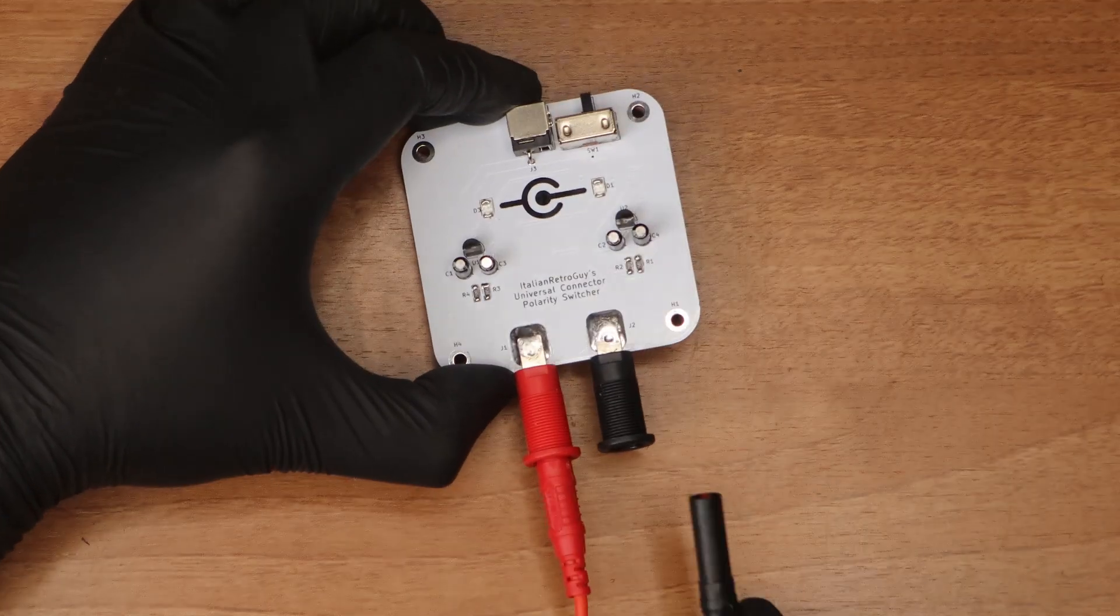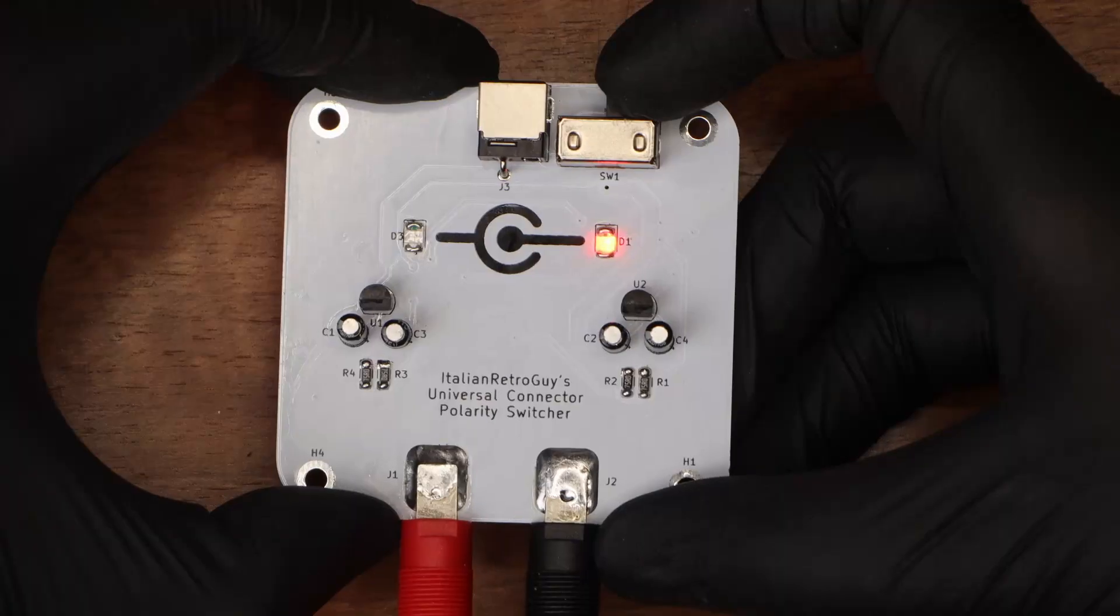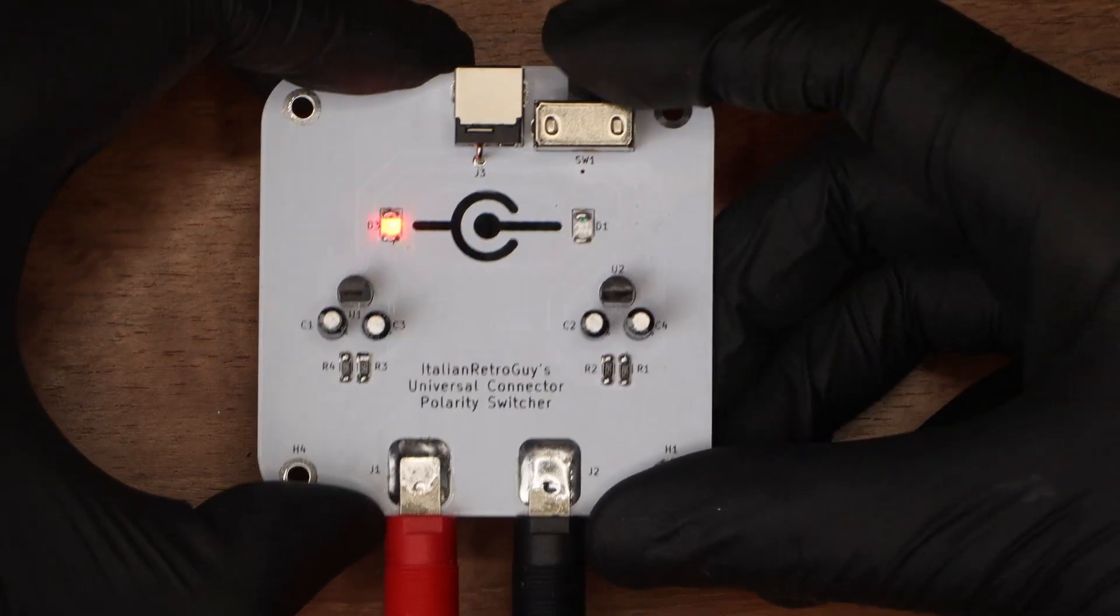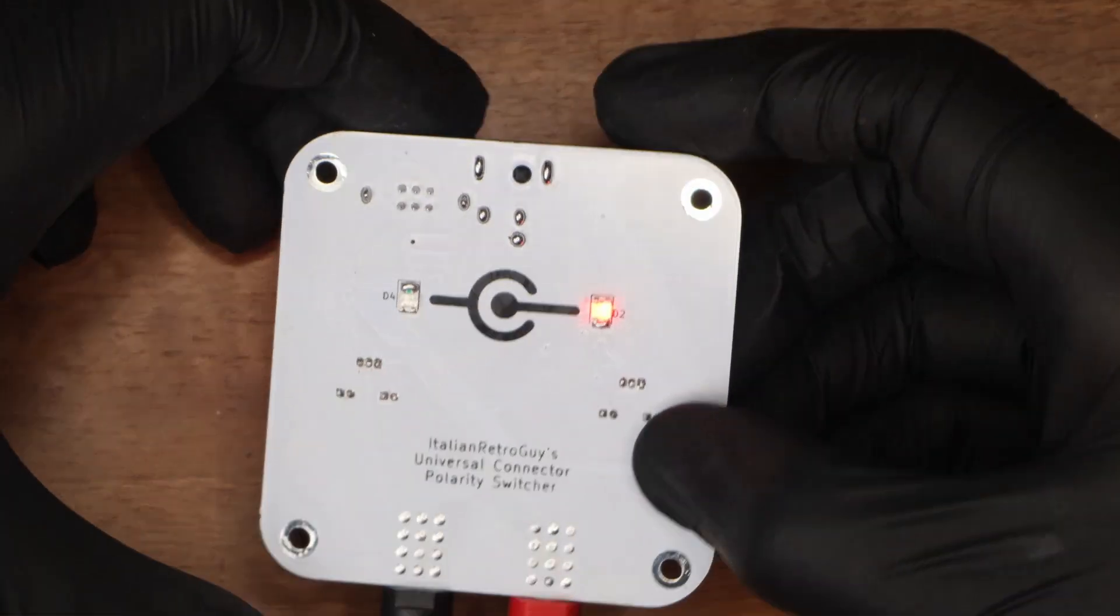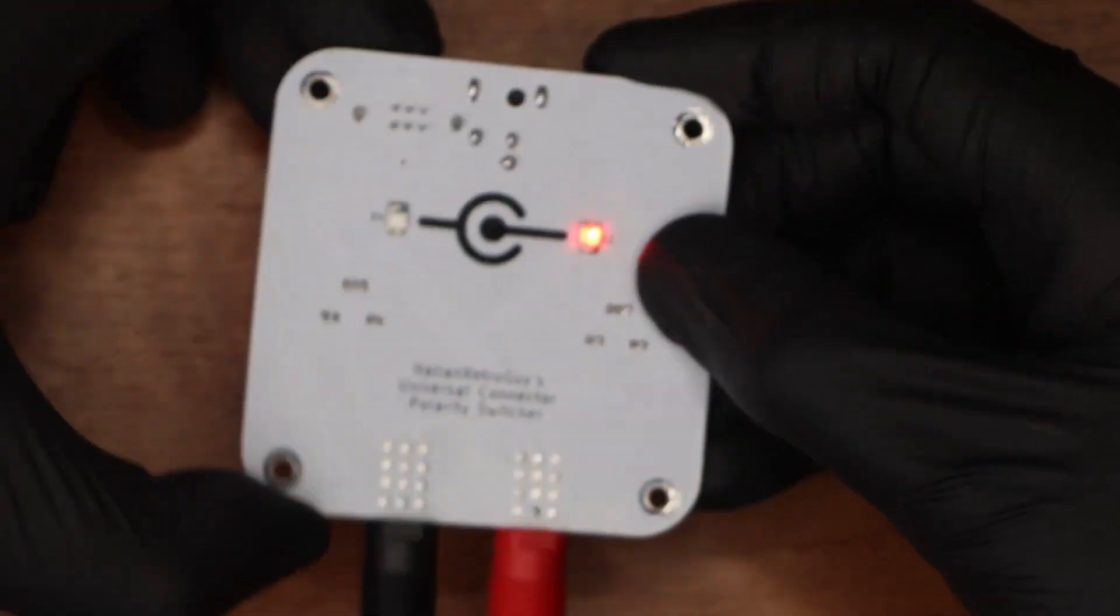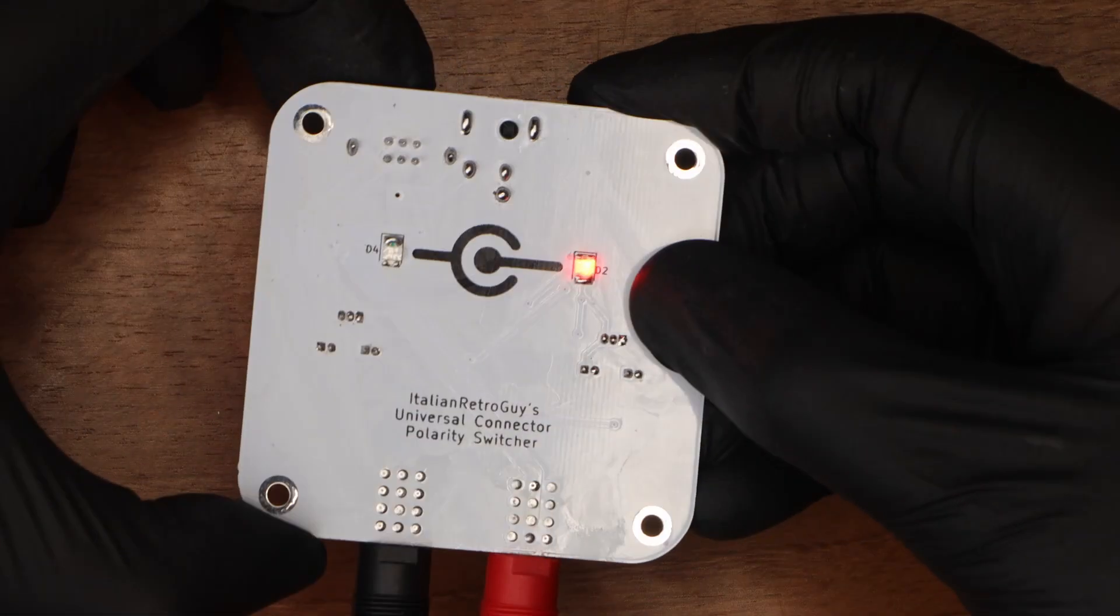Let's give it a try and power it on. And it works! This is my first real project. The LED indicates the positive side, and as you can see, flicking the switch inverts it, with the left side denoting the sleeve and the right side representing the tip.